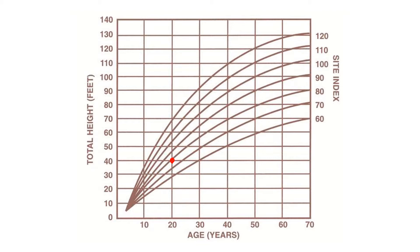So the height is along the y-axis and the age is along the x-axis. So if you had a tree that was 20 years old and 40 feet tall,